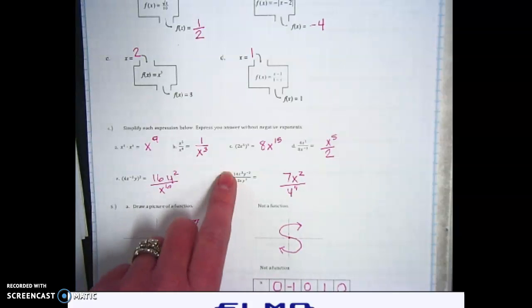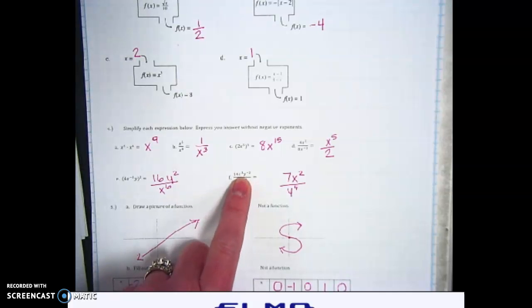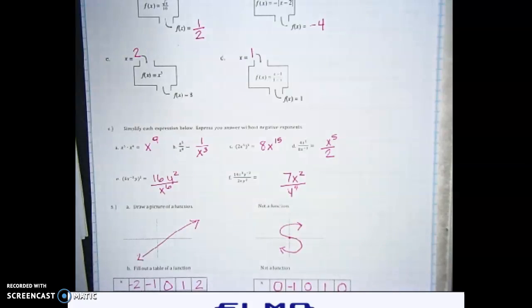Part F, 2 goes into 14 seven times, and that ends up in the numerator. x to the 1st in the denominator, you subtract that from the 3, so it becomes x to the 2nd. And the y to the negative 2nd, add that to the denominator, so you get y to the 4th.